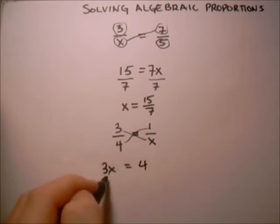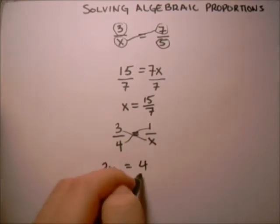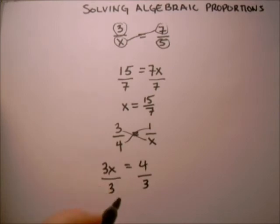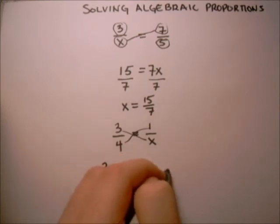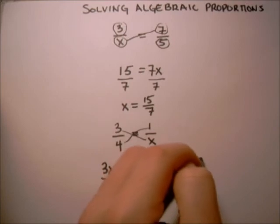And then we want to divide by the stuff multiplying x, so we'll divide by 3, and that gives us x equals 4 thirds.